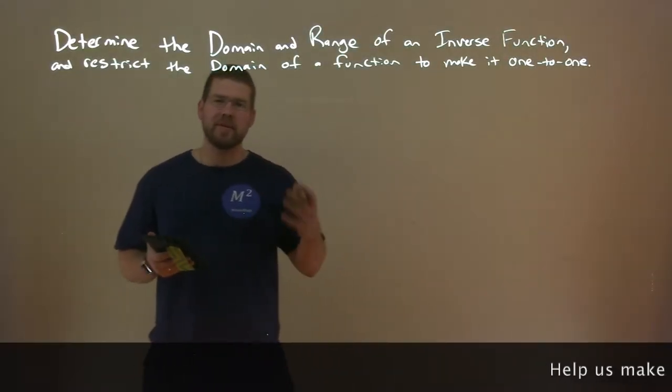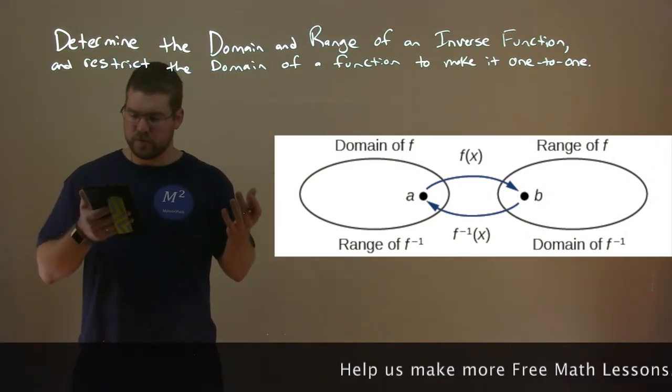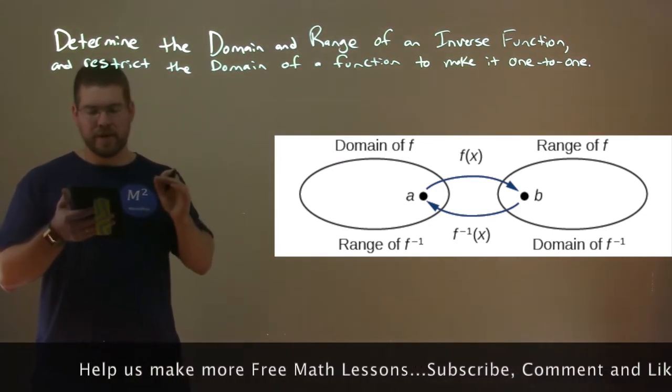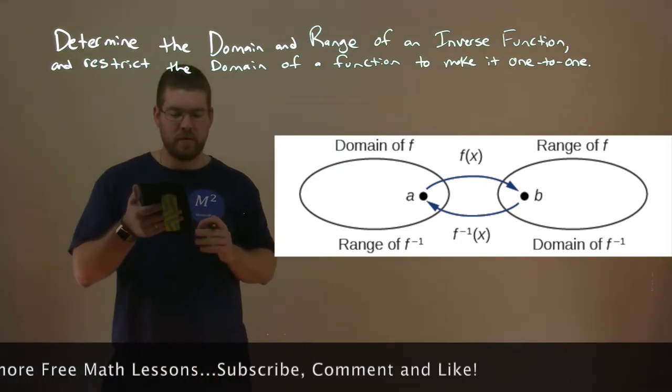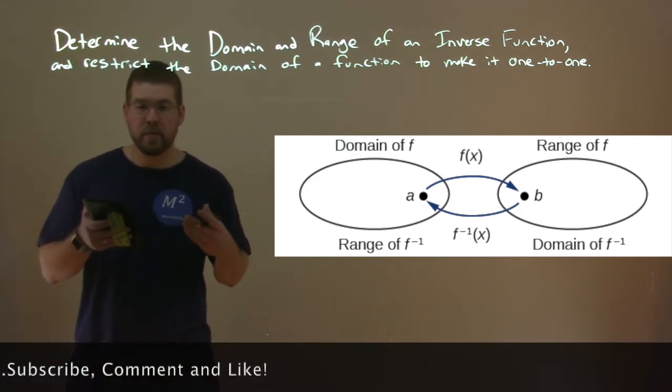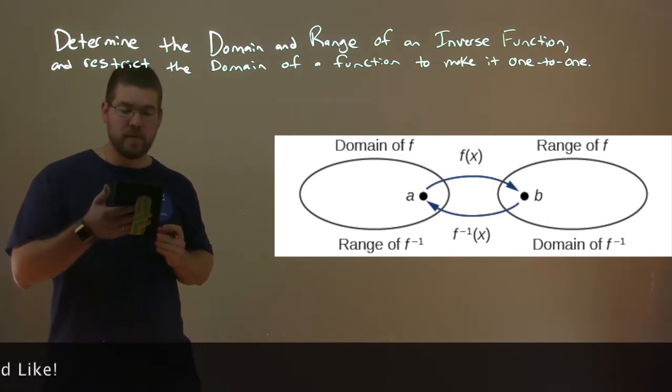Let's look at this graphic right here. It has two ovals. One's the domain of f, one's the range of f. The first one's also labeled the range of inverse of f, and the second oval is labeled domain of f inverse. The outputs of the function f are the inputs to f inverse, so the range of f is also the domain of f inverse.